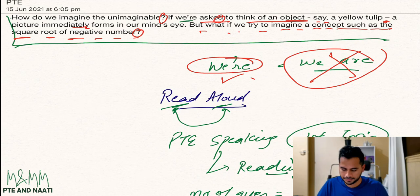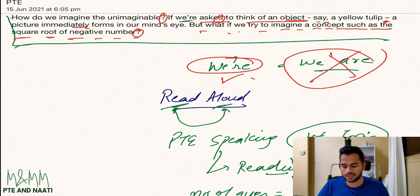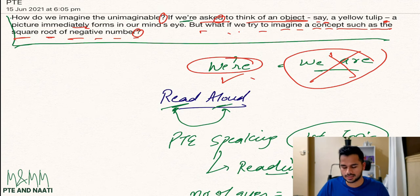Starting now: 'How do we imagine the unimaginable? If we are asked to think of an object, say a yellow tulip, a picture immediately forms in our mind's eye. But what if we try to imagine a concept such as the square root of negative number?'